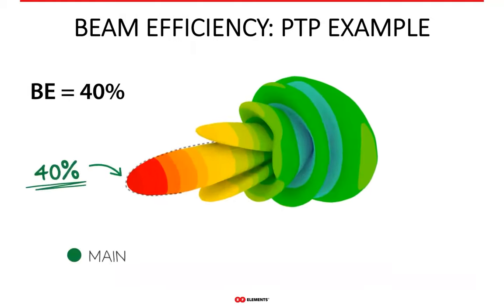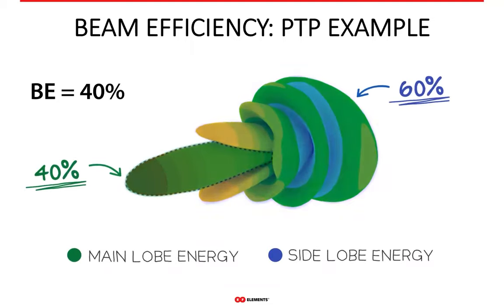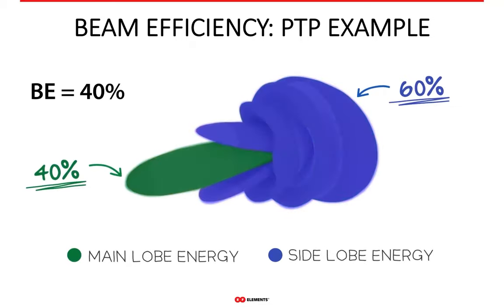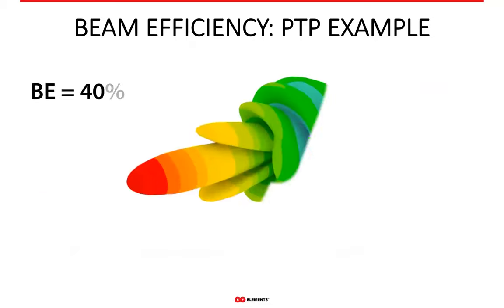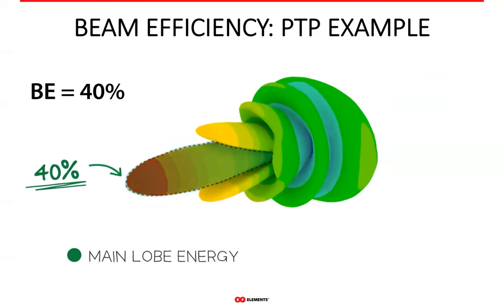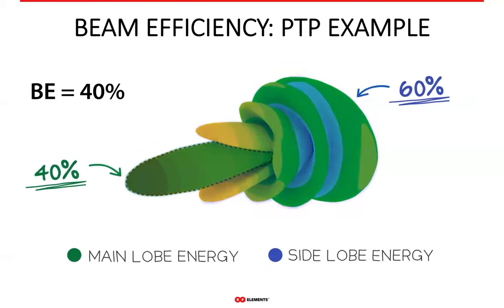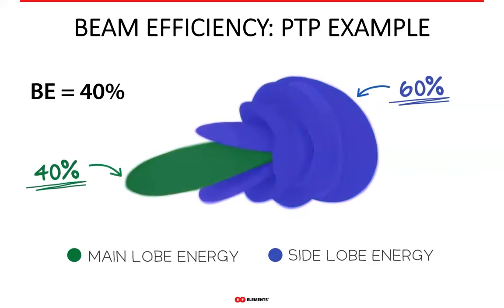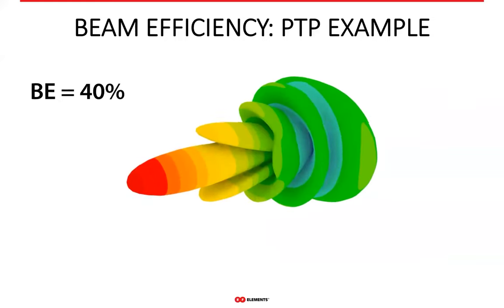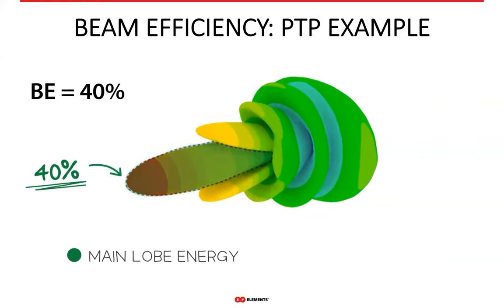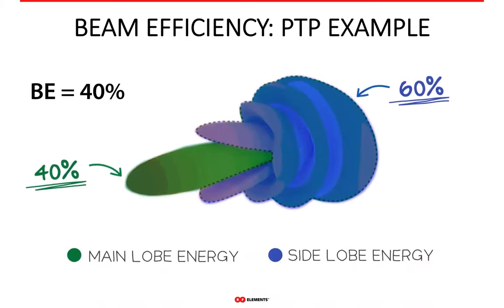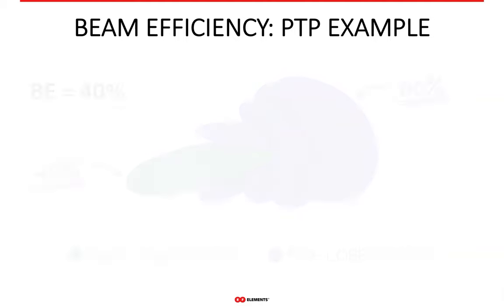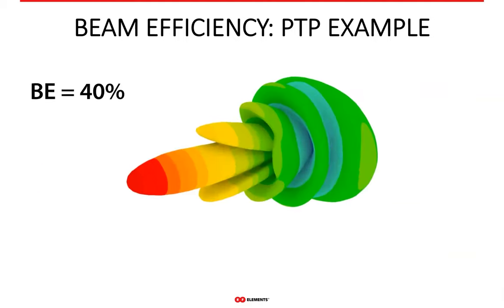If beam efficiency is 40%, then 40% of the power radiated is in the main lobe and the remaining 60% is in the side lobes. The beam efficiency definition we use considers the whole 3D radiation pattern, so it includes all the side lobes in every possible direction — not just one side lobe like the back lobe in front-to-back ratio, or the side lobe level, which give very limited information about side lobes.